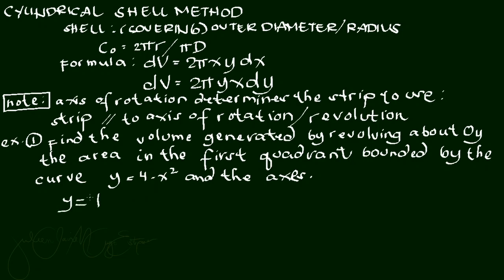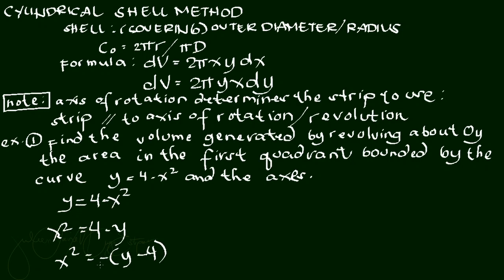Let us get the standard form to find the vertex and the opening of the parabola. Starting with y = 4 − x², transposing x² gives x² = 4 − y. Factoring out negative: x² = −(y − 4). The vertex is at (0, 4). Setting y = 0 to find the x-intercepts, we get 0 = 4 − x², so x² = 4.